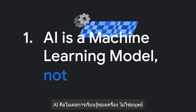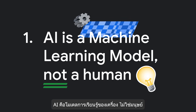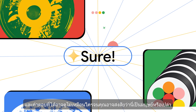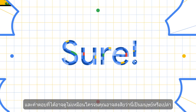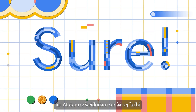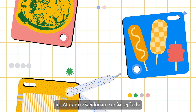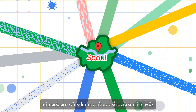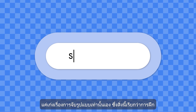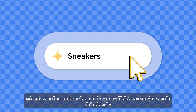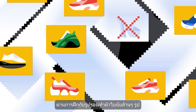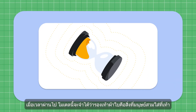AI is a machine learning model, not a human. When you interact with Generative AI, you'll enter a prompt and the response might seem so unique, you may wonder if it's human. But AI can't think for itself or feel emotions — it's just great at picking up patterns. This is called training. Take, for example, a text-to-image model. It learns what a sneaker is through being trained on millions of sneaker photos. Over time,